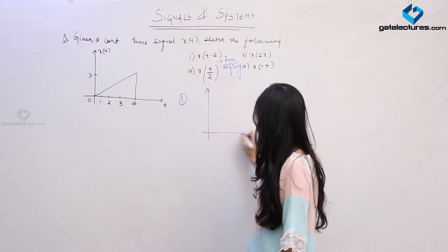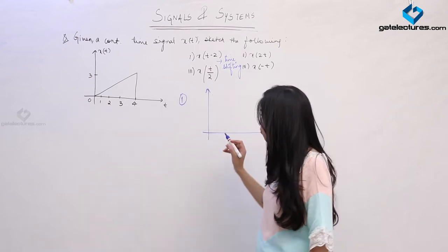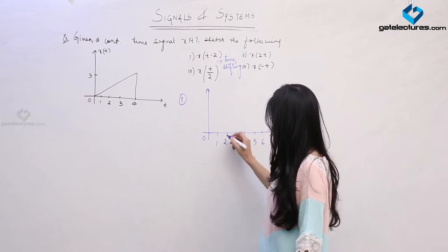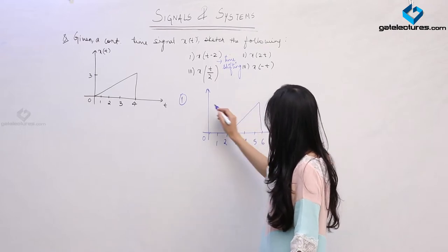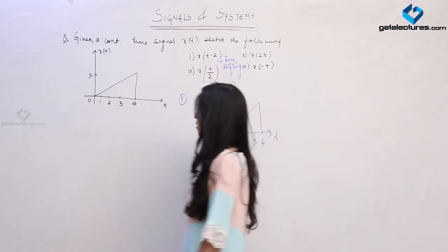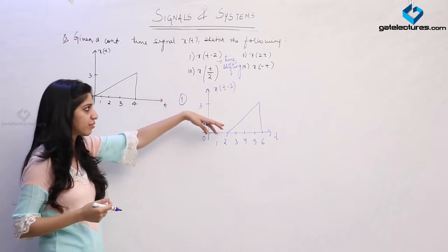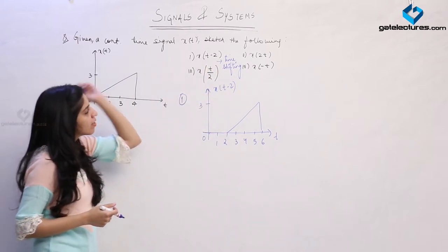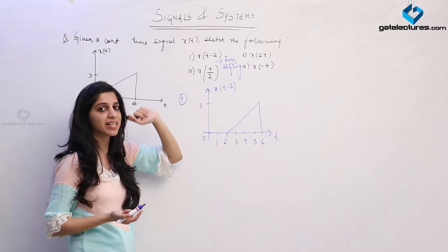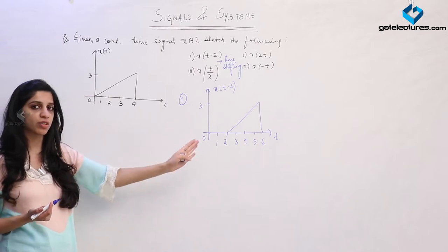This is how the signal is going to look. The signal was previously occurring between t=0 to t=4; now the signal is going to occur between t=2 to t=6. This is how X(t-2) is going to look. We have just performed a time shifting operation — since there is a minus sign, this is going to be a right shift. If you put the value t=2, you get X(0), which means at t=2 we get the signal's value at 0. That is why we have shifted towards the right.